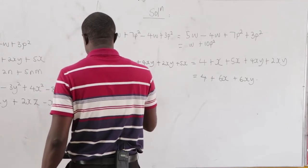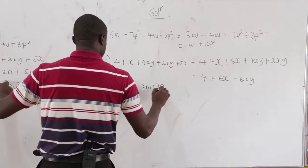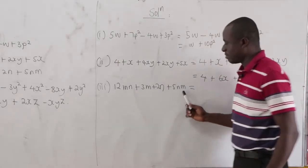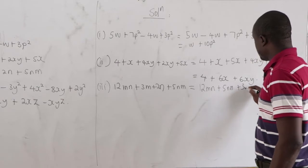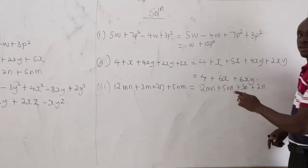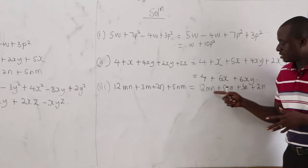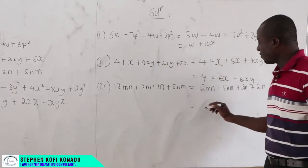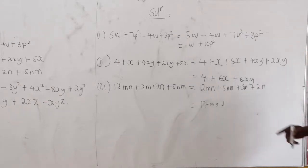Part iii: 12mn plus 3m plus 2n plus 5nm. Note that mn is the same as nm — just as 2 times 3 equals 3 times 2. So 12mn plus 5nm equals 17mn. Then 3m and 2n cannot be added. The answer is 17mn plus 3m plus 2n.